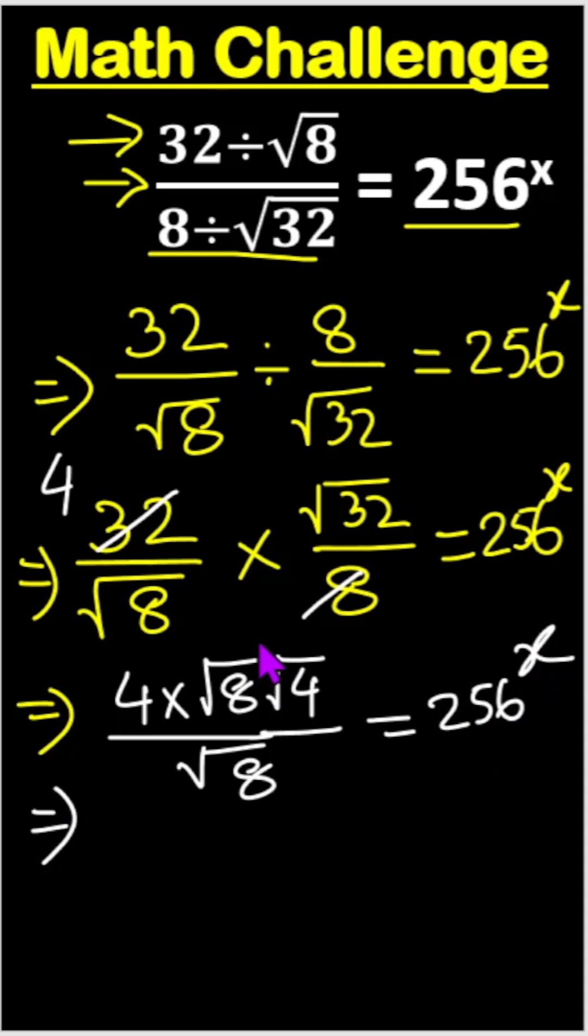Now look, this root 8 and this root 8 out, okay? And so here is 4 and here is root 4, root 4 means 2. So 4 times 2 equals to 256 to the power x.